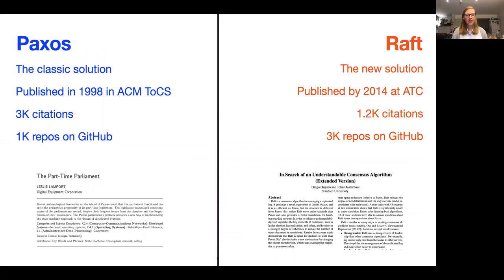On one hand we have Paxos, the classic solution to distributed consensus proposed by Leslie Lamport in 1998. It has over 3,000 citations and is a real staple of distributed systems courses.